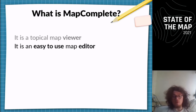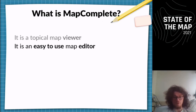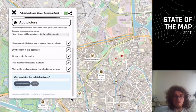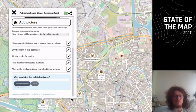Furthermore, it's an easy-to-use map editor. For the points of interest which are shown, some questions are asked. For example, in the case of a cyclist, if a bicycle pump is shown, it asks which valves are supported. And at last, it's also a way to quickly create and deploy thematic maps which have survey capability. Here is one which shows public bookcases in Ghent. It asks a few questions, like who maintains the public bookcase, shows what is already known — the capacity, the name, if it's indoor or outdoor — and gives the ability to change those values and add a picture on top.